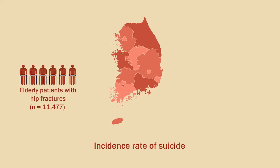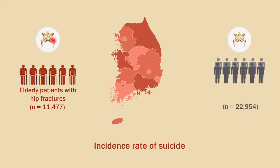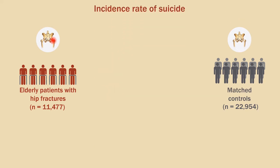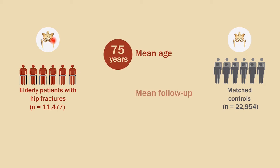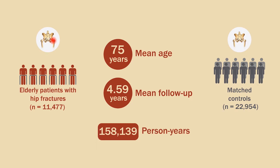and compared it with the suicide rate in a group of 22,954 matched controls who were selected by propensity score matching. The mean age in both cohorts was 75 years, and the mean duration of follow-up was 4.59 years, generating 158,139 person-years in total.